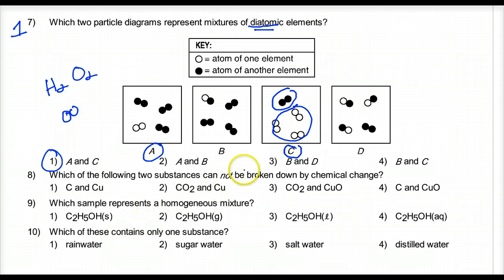Which of the following two substances cannot be broken down by a chemical change? Well, if they can't be broken down by a chemical change, it's because they're already in their simplest form. And that's elemental form. Look at that. Different capitals. Different elements. Choice one. Nine. Which sample represents a homogeneous mixture? That screams to me aqueous. Mixed with water. Dissolved. Choice four.